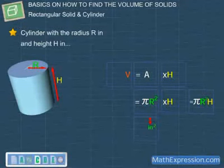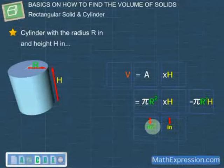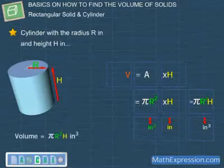This π × R² × H only makes sense if we include the unit for it. Since we are multiplying R² with H, notice that this is actually multiplying three lengths with unit inches together. This will give the unit for this volume as cubic inches. Hence, the volume of this cylinder will be π × R² × H cubic inches.